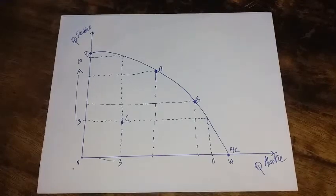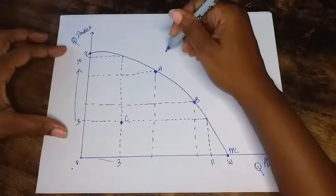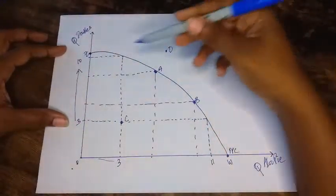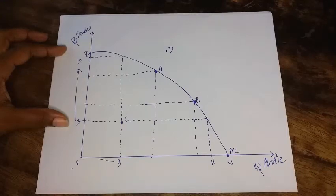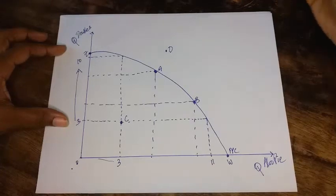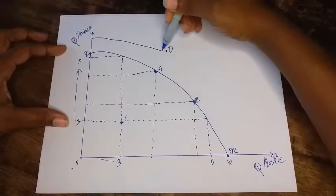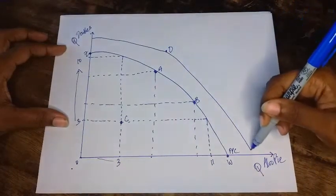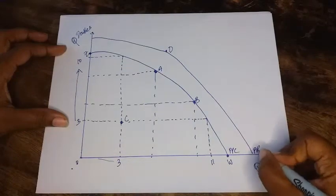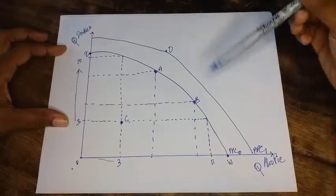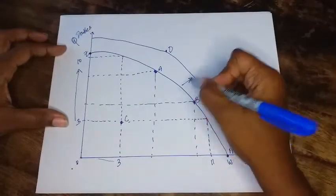Now sometimes you have a point such as this here. You can call this one PPC1D, which is outside the PPC curve. This is what is called unattainable given your level of resources. However, it is possible at some point in time for us to have a PPC curve which shifts outwards and we get a new PPC. So we can call this one PPC1. We could call the old one PPC0. So you have an outward shift.